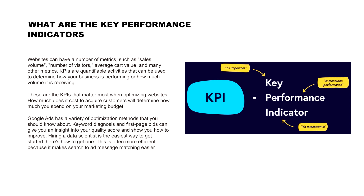Websites can have a number of metrics, such as sales volume, number of visitors, average cart value, and many other metrics. KPIs are quantifiable activities that can be used to determine how your business is performing or how much volume it is receiving.